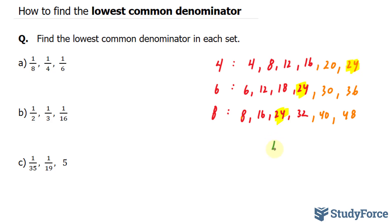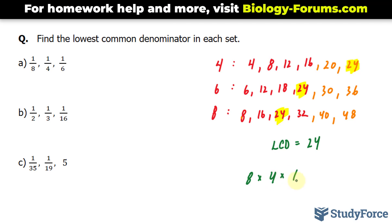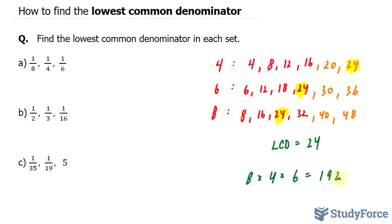We can denote that as LCD is equal to 24. Now, if you would like to find a common denominator as opposed to the lowest common denominator, all you have to do is multiply all the denominators together. If you multiply 8 times 4 times 6, using our calculator, that equals 192. The reason why we find the lowest common denominator is because 24 is a smaller number, so it's easier to work with than 192.